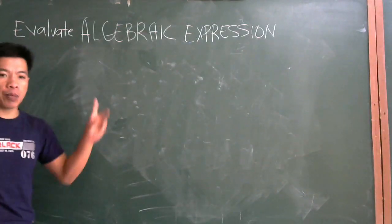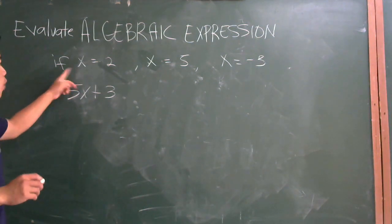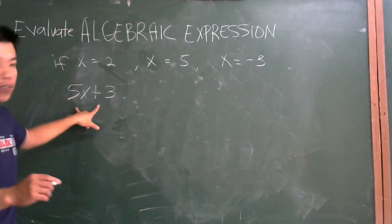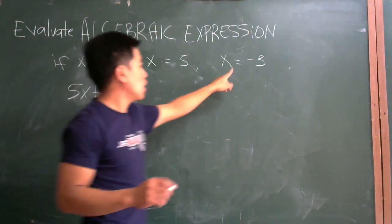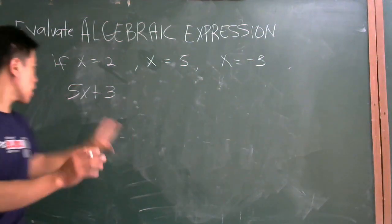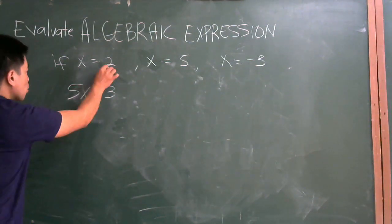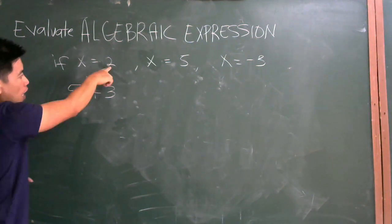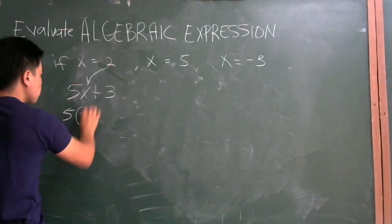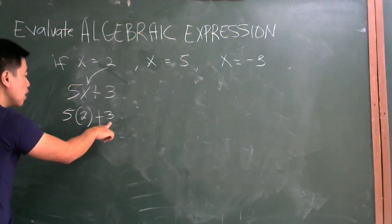How do we evaluate an algebraic expression? To find the value of an algebraic expression, we substitute the value of X. For example, what is the value of 5X plus 3 if X is equal to 2, X is equal to 5, and X is equal to negative 3? If X is equal to 2, you substitute 2 — replace X with 2. So it becomes 5 times 2 plus 3. Five times 2 is 10, plus 3, answer is 13.